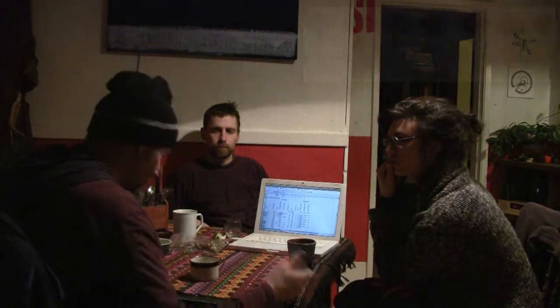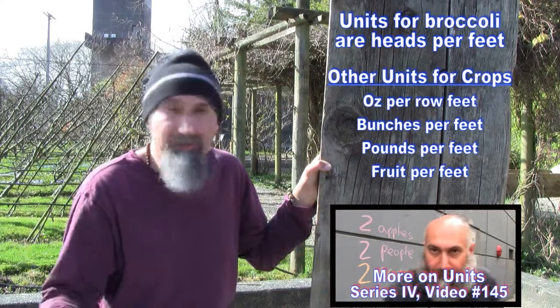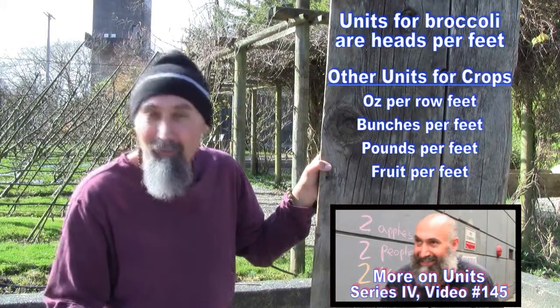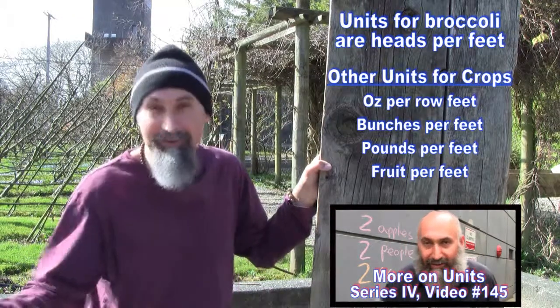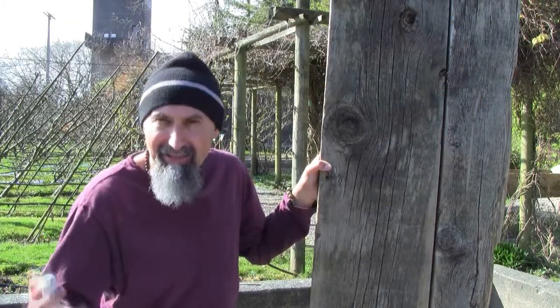So it's a ratio — heads per foot. For a bed of a certain length, you can expect this many heads. When the number says 0.67 heads per foot, if you have 10 feet you can expect 6.7 heads of broccoli. The units change depending on what you're growing — it could be ounces per foot, bunches per foot, or fruit per foot. For broccoli, the yield is 0.67 heads per foot.